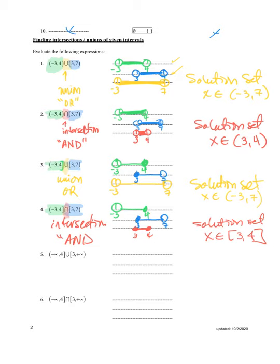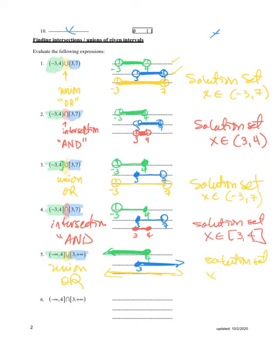The next one goes from negative infinity to four, including four because it's closed, and everything less than that. The second set is closed at three and everything greater than three. This is union, which means it can be in either set. So what does the solution set look like? It's the entire number line. X can be anywhere on the number line — all real numbers.